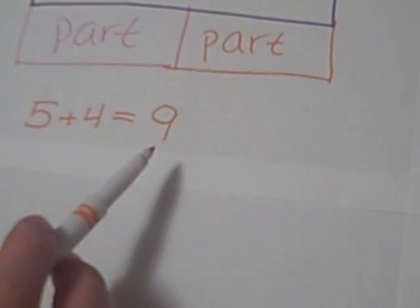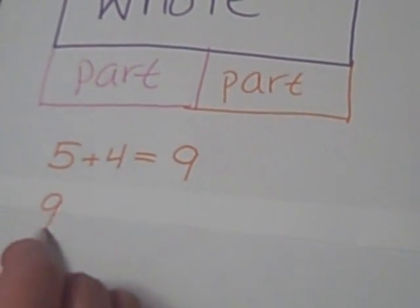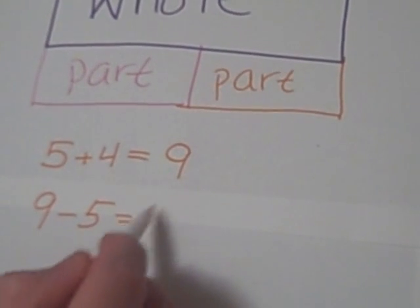We can also apply this to subtraction, because subtraction is the whole minus one of the parts will give you the other part. So we can do 9 minus 5 equals 4.